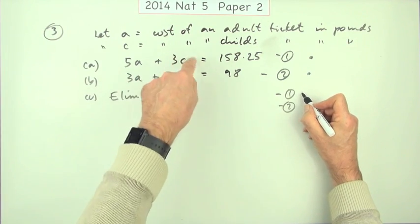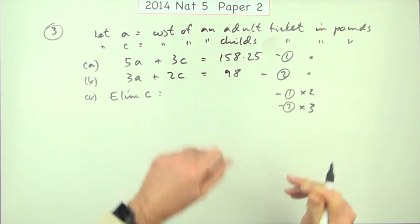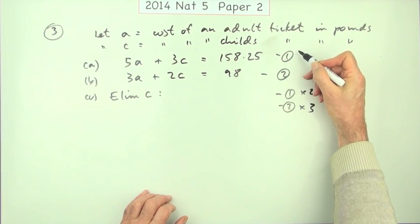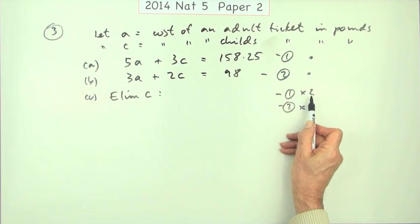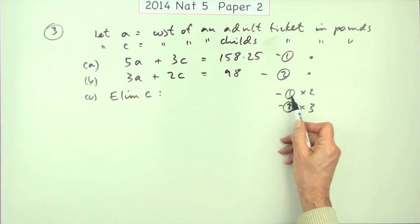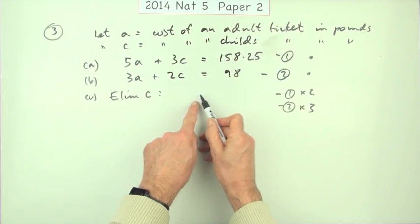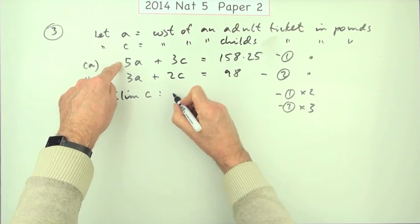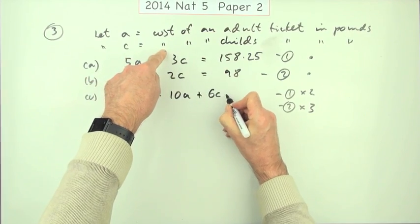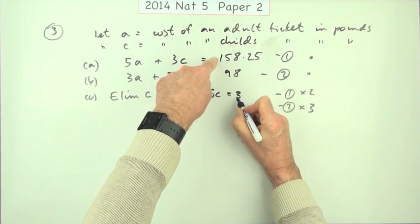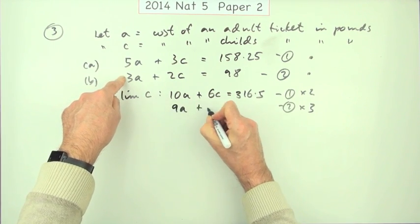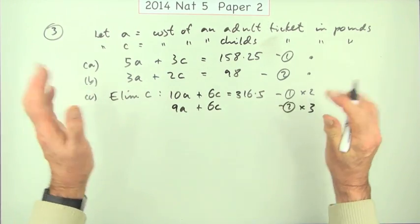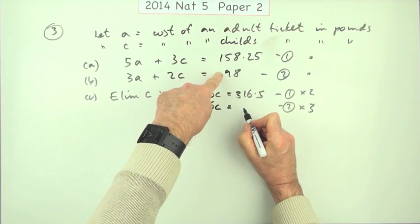Notice I didn't put the times two up there; this is actually what I'm going to write. This will be equation one that's been doubled. Strictly speaking, that's where that two times it should appear to explain this equation. It's number one doubled. Doubling that's going to be 10A + 6C = 316.5, or you could just use your calculator. Three times this: 9A plus 6C because that was the whole plan, equals 294. That's almost 300, just take away 6.